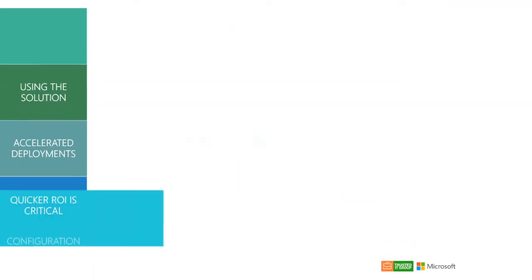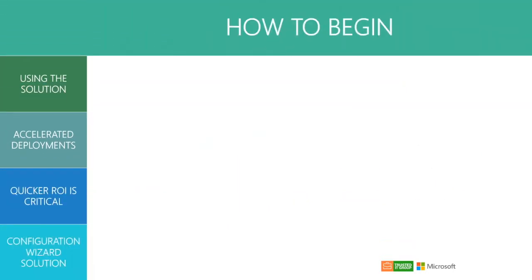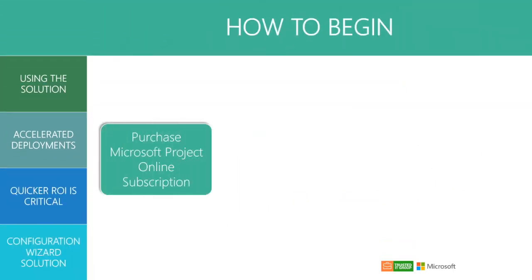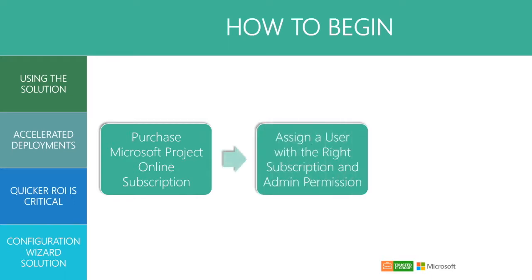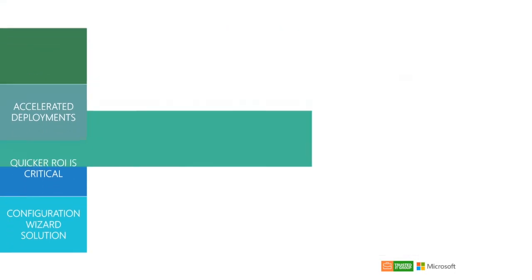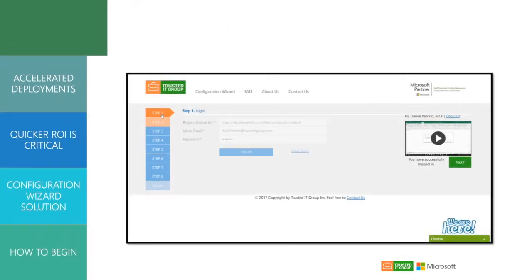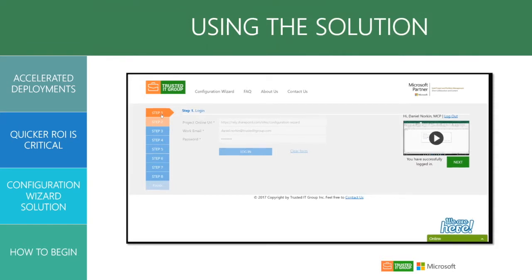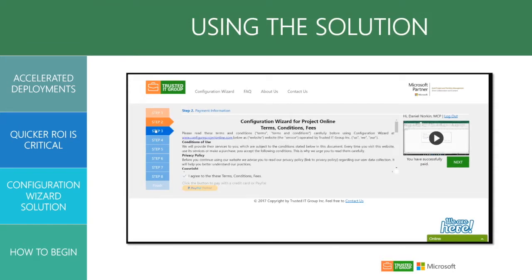You can begin using the Configuration Wizard by purchasing a Microsoft Project Online subscription, assigning a subscription to the user, and visiting our website, www.configureprojectonline.com to create an account. Once you have created an account, you will be guided through the Configuration Wizard's 8-step process.